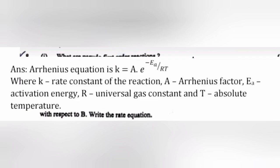2. Write Arrhenius equation. Answer: Arrhenius equation is K = A × e^(-Ea/RT), where K is rate constant of reaction, A is Arrhenius factor, Ea is activation energy, R is universal gas constant, and T is absolute temperature.